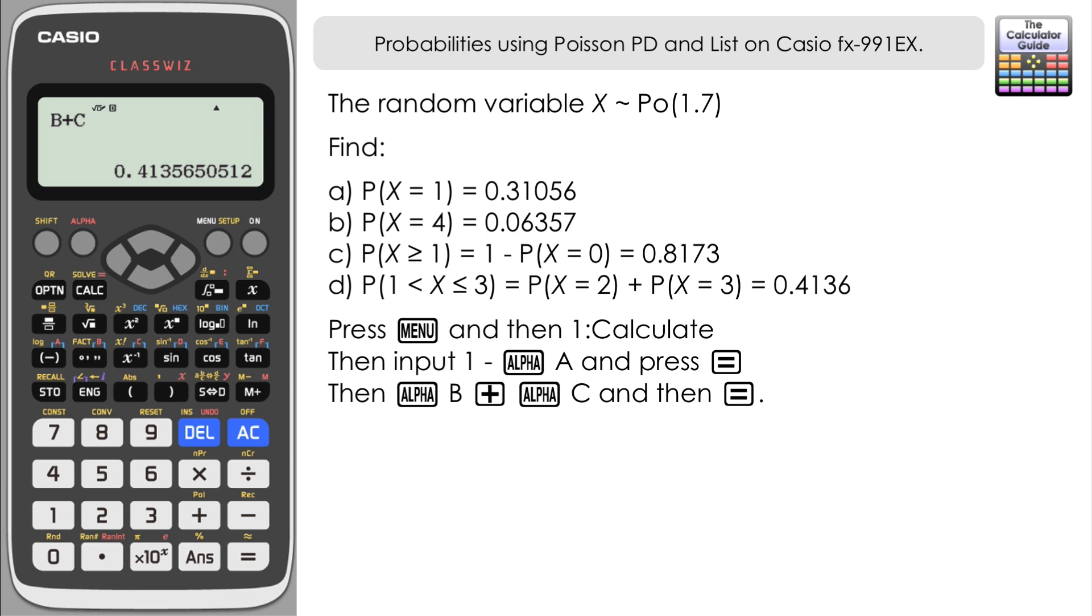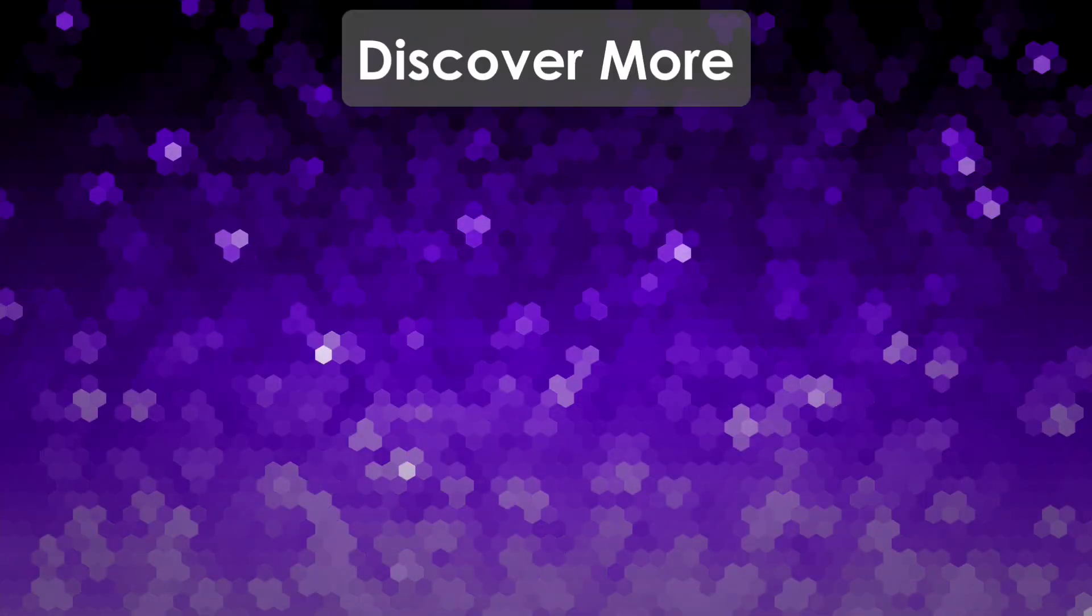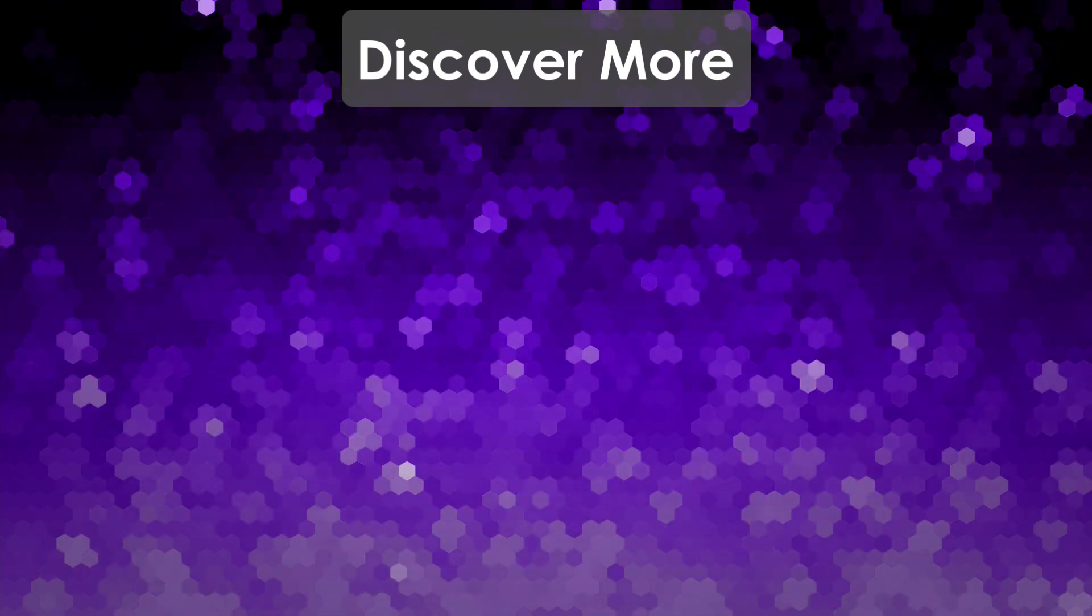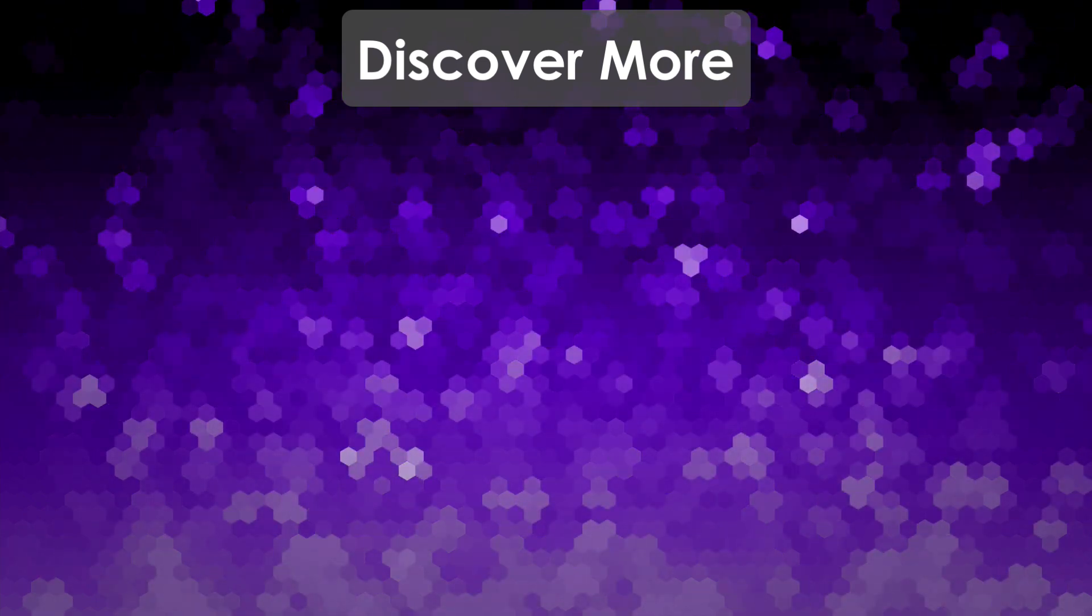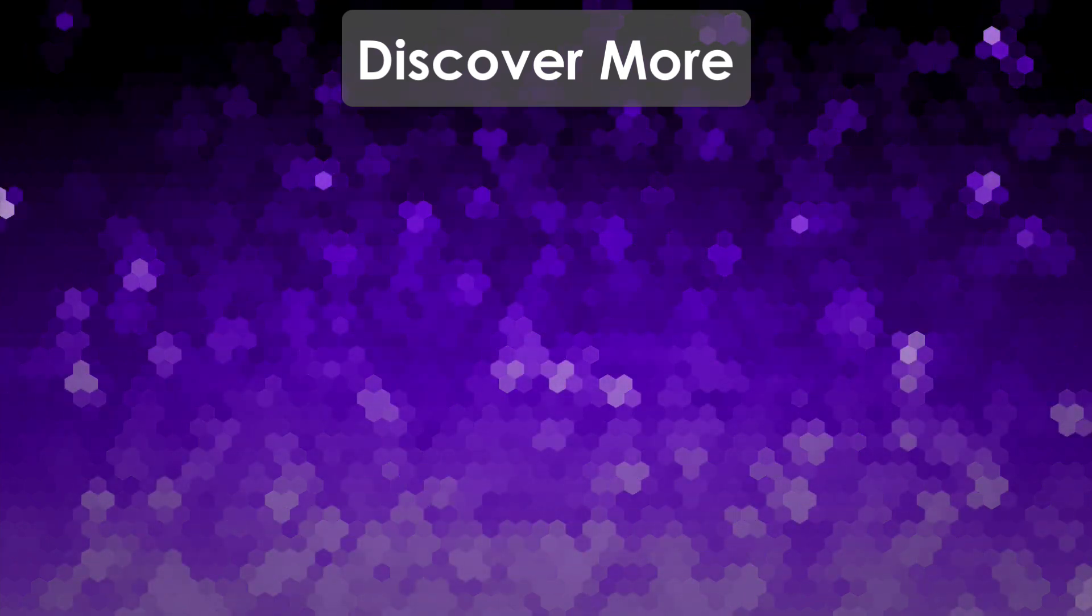So there we go, how we can use the Poisson probability distribution and the list feature on the Casio ClassWiz FX991EX to answer this question involving random variables with a Poisson distribution. That's it for this video. Thank you very much for watching and I will see you next time on The Calculator Guide.